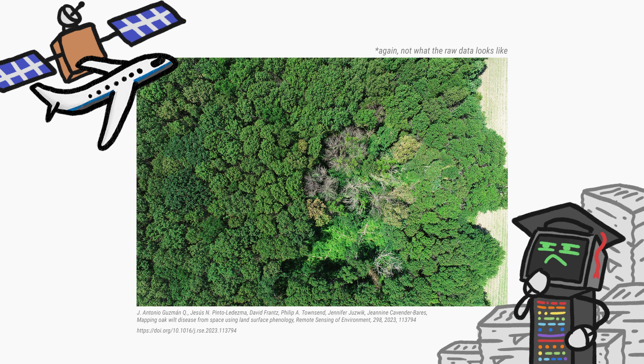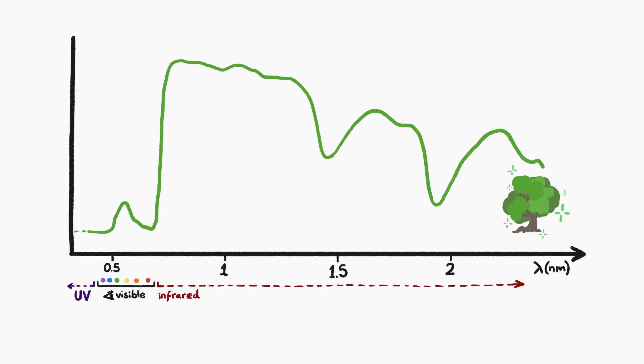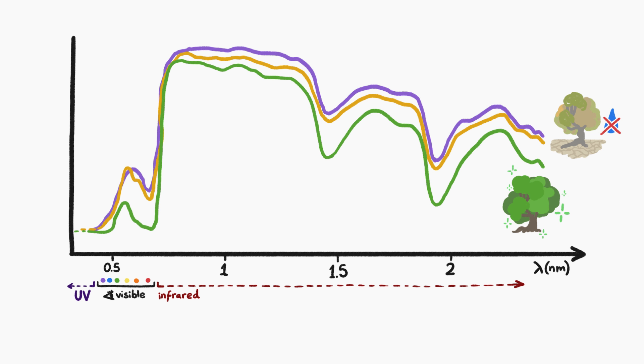The programs can even find trees that aren't doing well and figure out the particular reason they aren't doing well. Like, an oak tree is supposed to have a fingerprint like this. If it has a fingerprint like this, it's drier than it should be, suggesting drought. If it has a fingerprint like this, it's having trouble photosynthesizing - it probably has a disease.